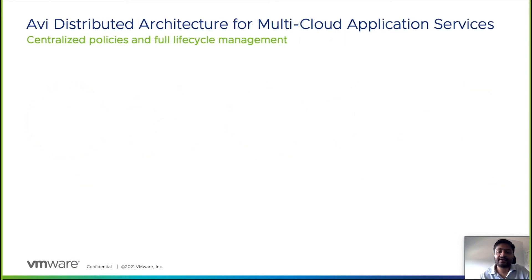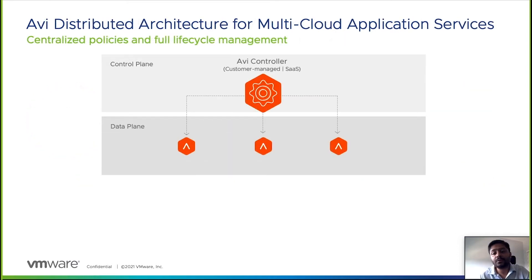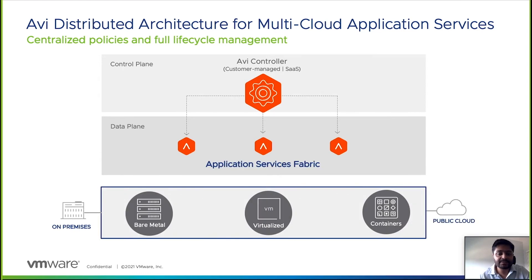Let's take a brief look at the Avi Networks platform, now known as VMware NSX Advanced Load Balancer. Avi is a modern software-defined elastic application delivery fabric. It is composed of a central control plane and a distributed data plane. Avi controllers provide a centralized policy engine which delivers full lifecycle management for applications. Avi service engines are the load balancers which can be deployed anywhere, natively in a fully orchestrated fashion by the Avi controllers, on-premise or in the public clouds.